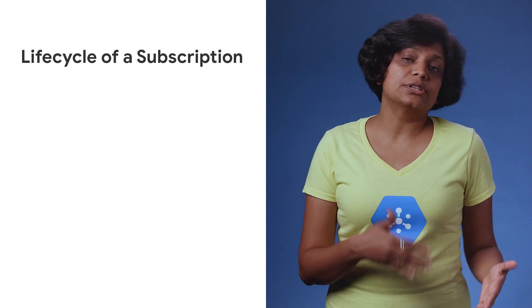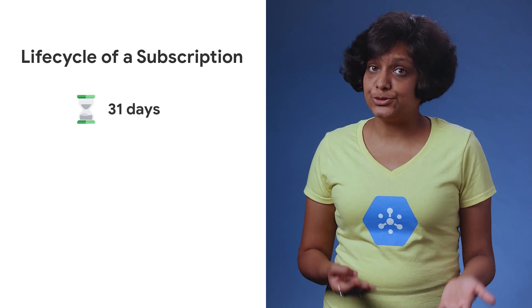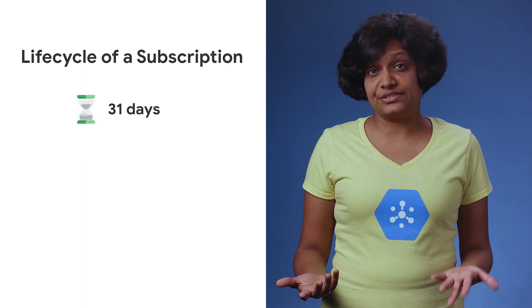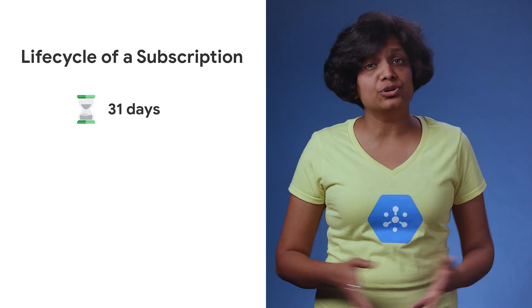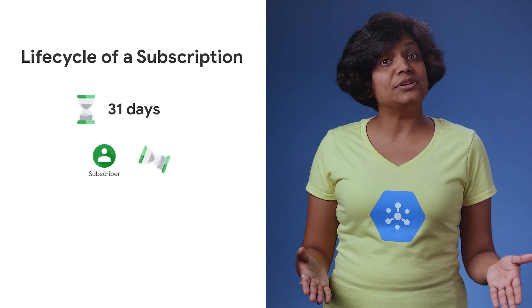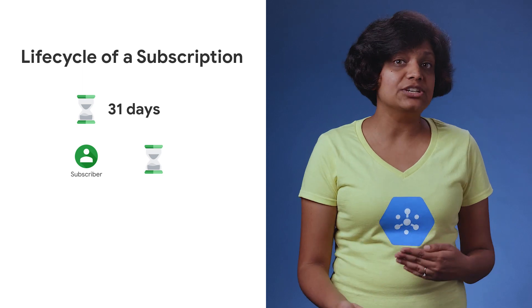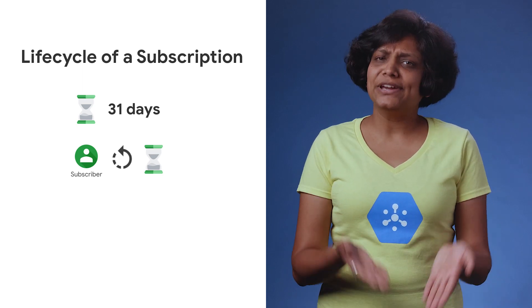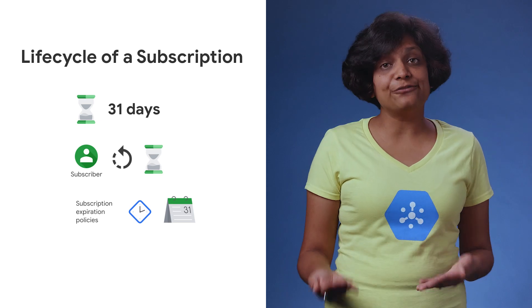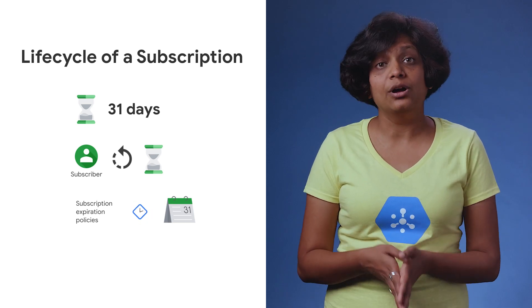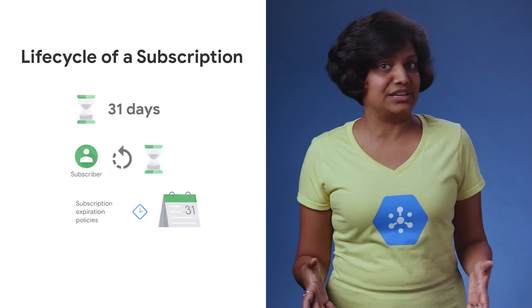Now that we know how push and pull subscriptions work, how can we choose which method is best for our use case? Stay tuned for the next episode to find out. Now let's talk about the lifecycle of a subscription. By default, a subscription expires after 31 days of inactivity. Inactivity can mean no active connections, pull requests, or push successes. If Cloud PubSub detects subscriber activity, the subscription deletion clock restarts. By using subscription expiration policies, you can configure the inactivity duration or make the subscription persistent regardless of activity.